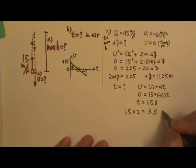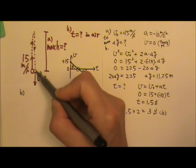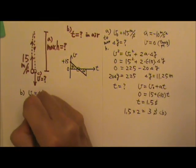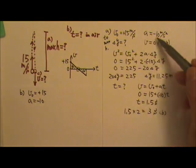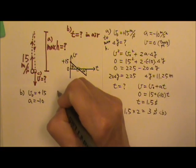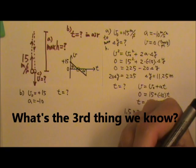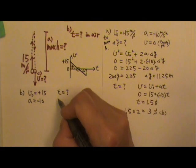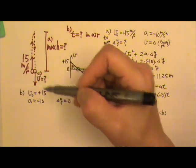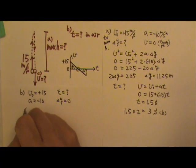This is one way to find the answer for part B. Another way to find the total time in air is to consider the entire trip from start to end. The initial velocity is still positive 15, the acceleration is still negative 10. But the final velocity is no longer zero because this is not a turning point — right before it lands, the velocity is not zero. You're looking for the time. What's the third thing we know? The third thing we know is that delta y is zero, because the initial position and the final position are the same.